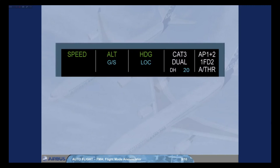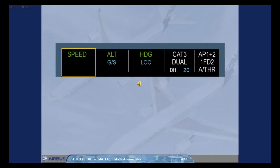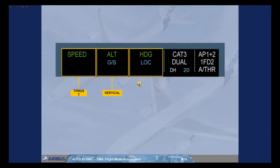As you can see, the FMA is divided into 5 columns. The first column is dedicated to thrust — this is where the autothrust modes appear. The second one displays the vertical modes of the autopilots and flight directors. The third one displays the lateral modes of the autopilots and flight directors.